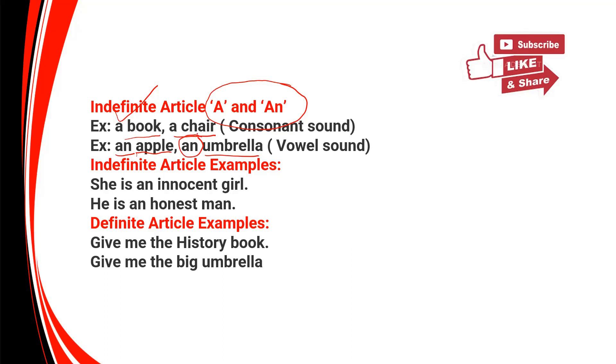She is an innocent girl — 'i' is a vowel sound. He is an honest man — 'h' is silent, so the first sound is the vowel 'o'.